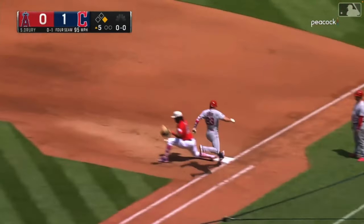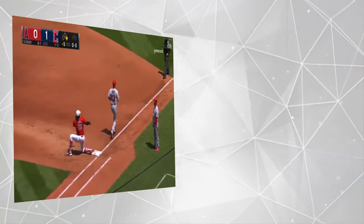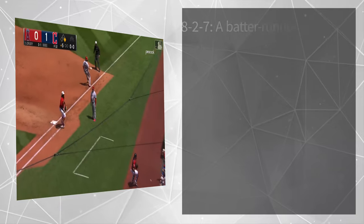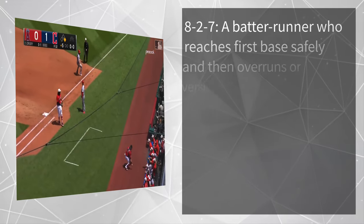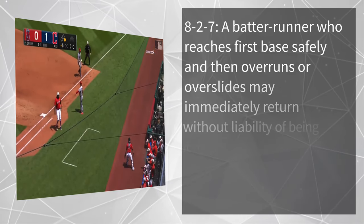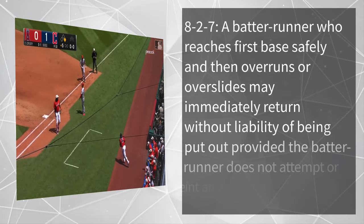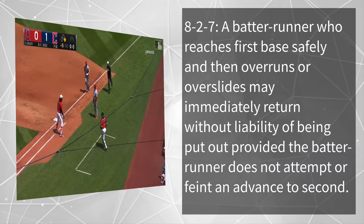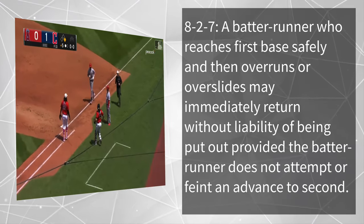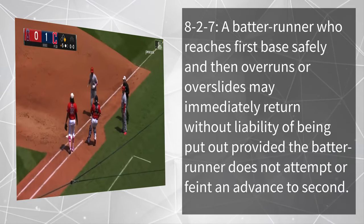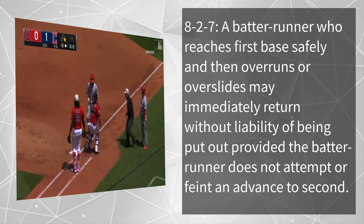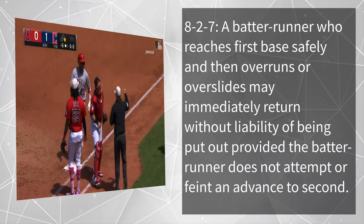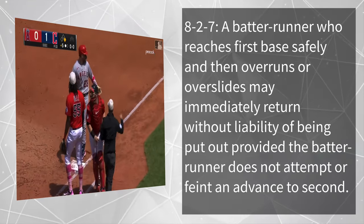The rule being used here is Rule 8-2-7. A batter-runner who reaches first base safely and then overruns or overslides may immediately return without liability of being put out, provided the batter-runner does not attempt or feint an advance to second.